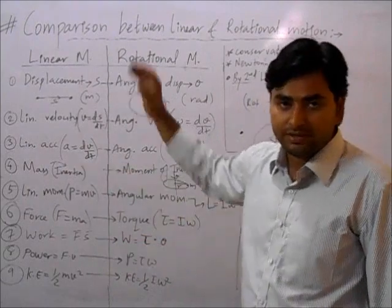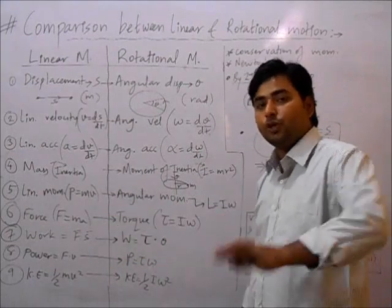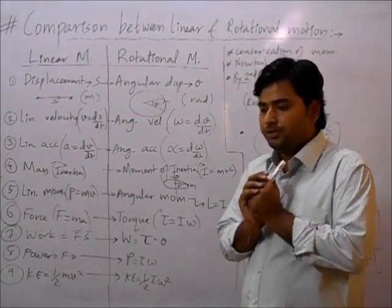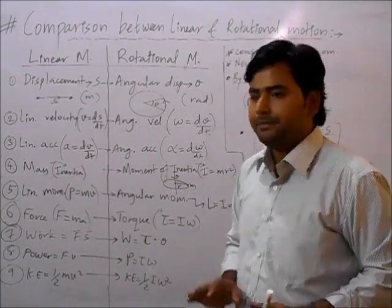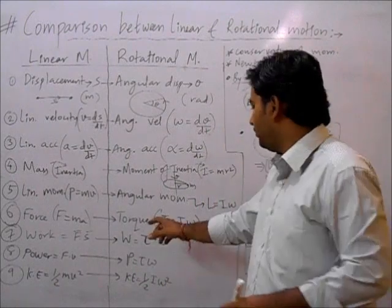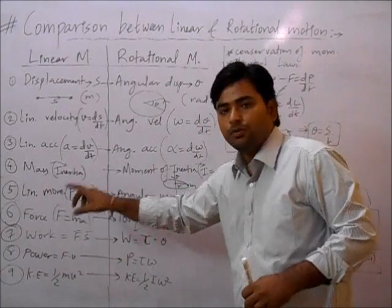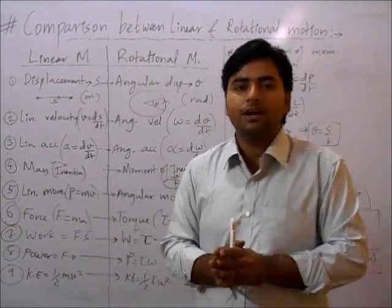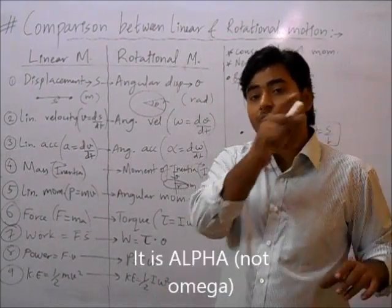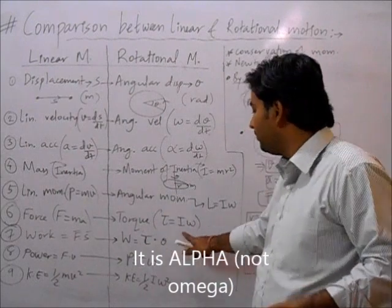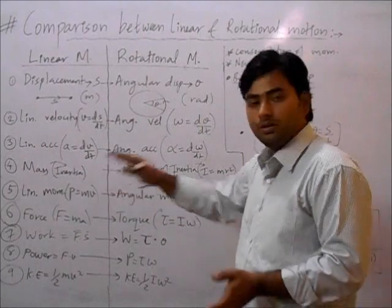Next is force. Force = mass × acceleration. In rotational motion, force becomes torque. If you want to provide straight-line motion, you apply force; if you want rotation, you apply torque. So torque τ = Iα, where I is moment of inertia and α is angular acceleration.